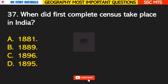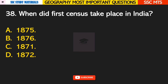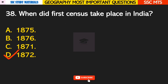Question number 37: when did the first complete census take place in India? Answer A — it took place in the year 1881. Question number 38: when did the first census take place in India? Answer D — it took place in the year 1872.